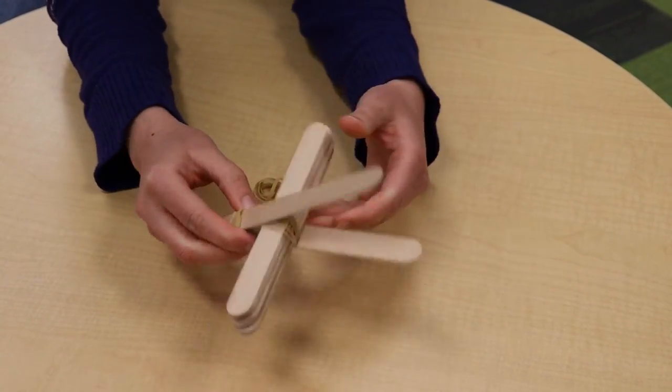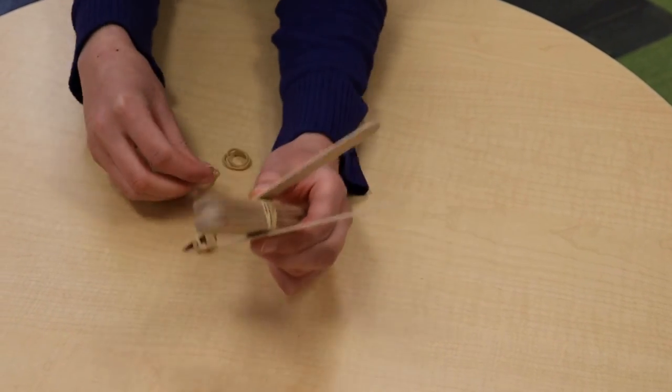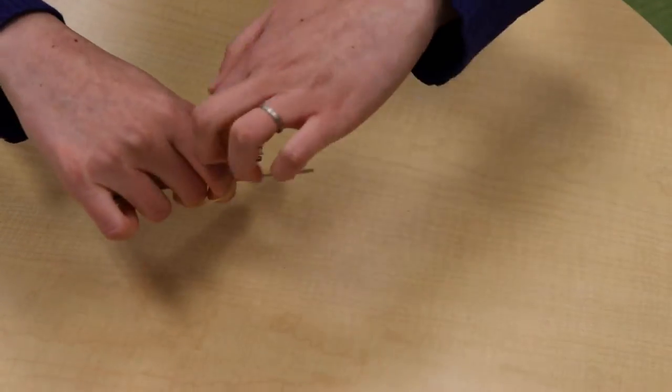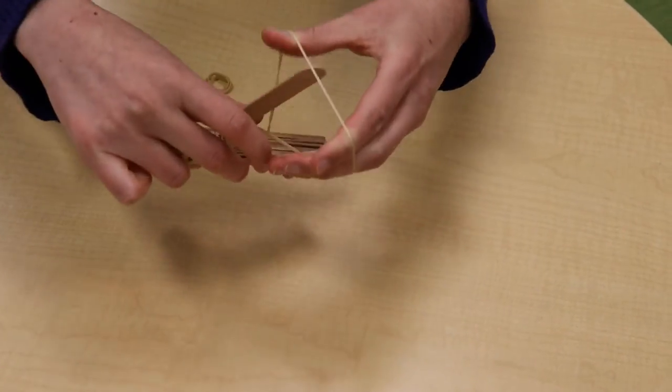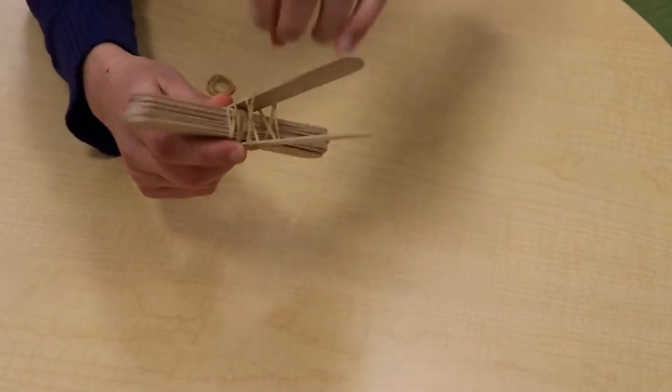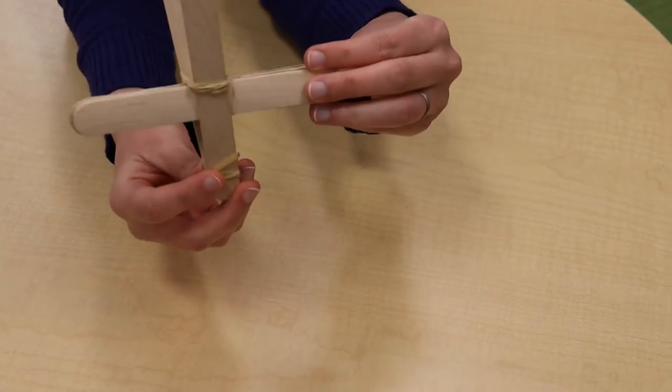And then to secure this, I'm going to put another rubber band up here. So let's tie that off. Now, you don't have to tie it too tight because you don't want your rubber band to snap, so make sure you're being careful. And so this is the shape you're going to have right now.